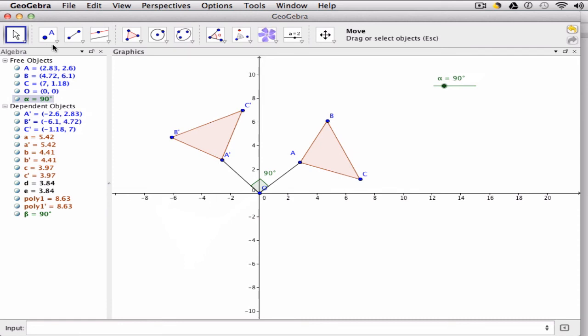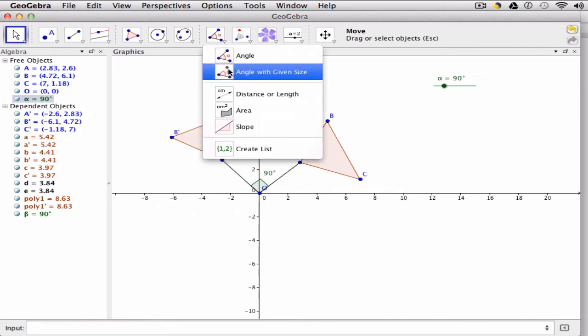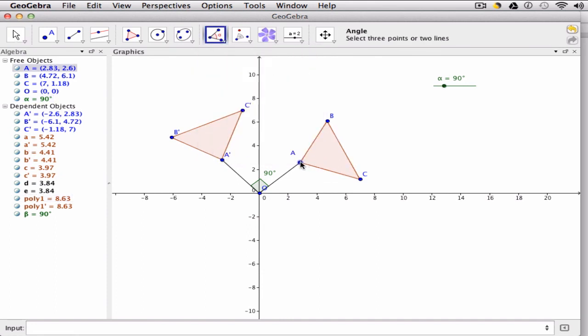And if you want to show the other side of the angle here, well, again, set up my angle tool. Click the points in reverse order, and you get the other piece of the angle. You can even change the color here to kind of highlight what's happening.